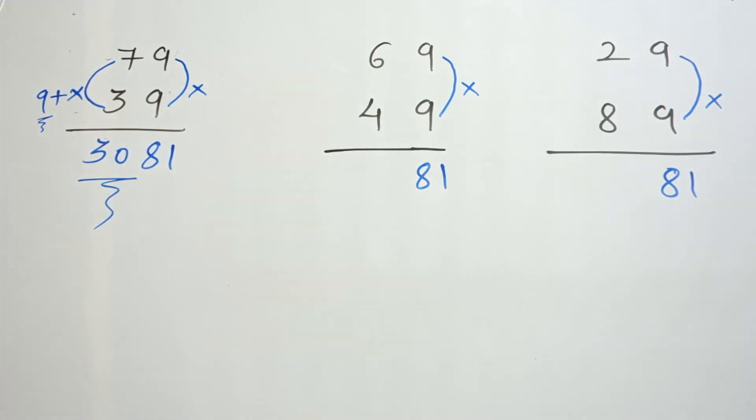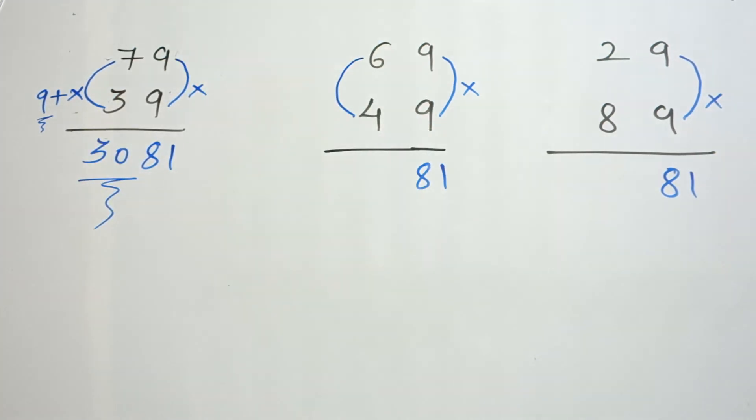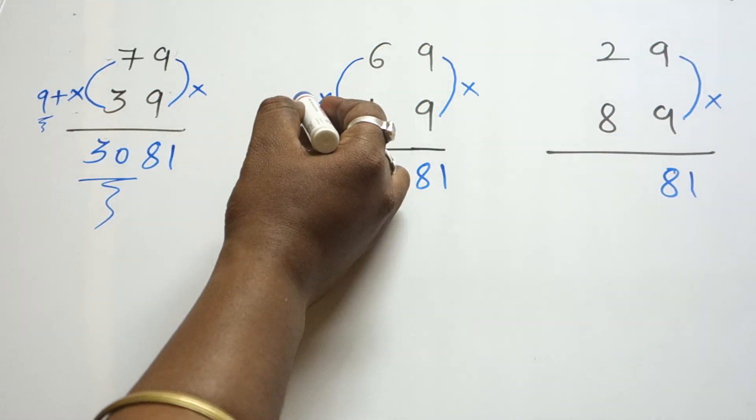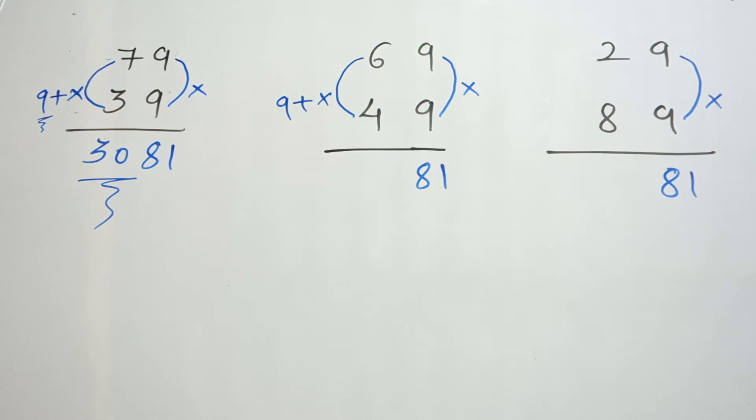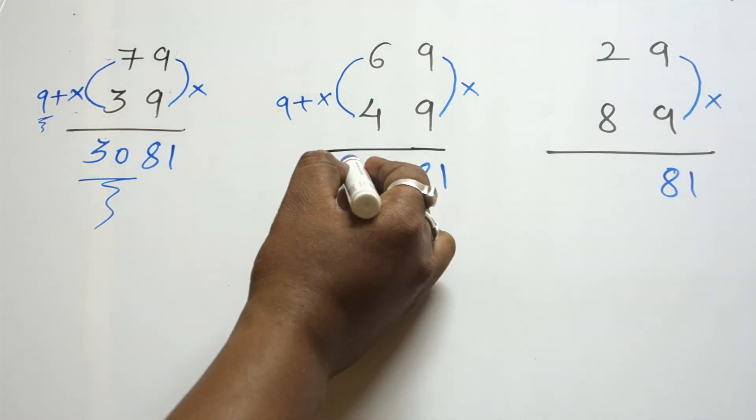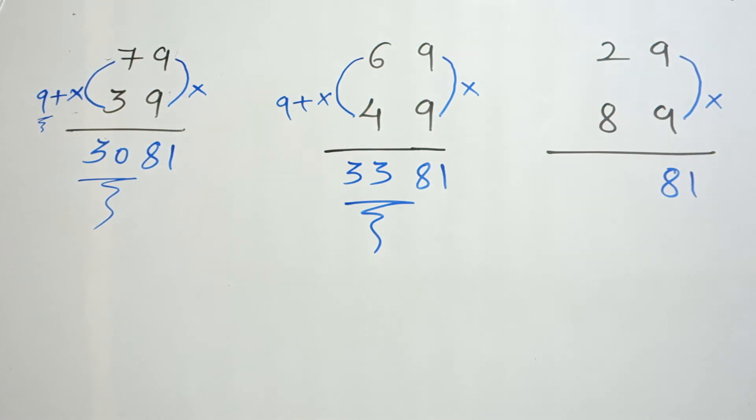Moving on to the second example: 6 times 4 is 24. Multiply again, apply the same fundamental, add 9 to it, so 24 plus 9 is 33. So when you multiply 69 into 49, you will get the answer 3381.